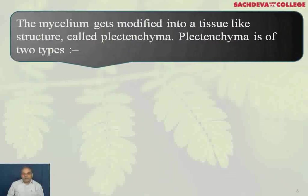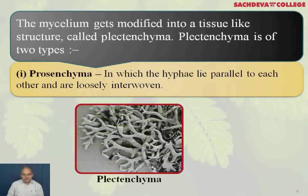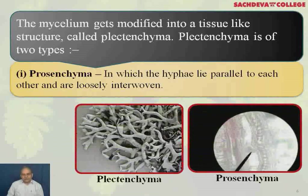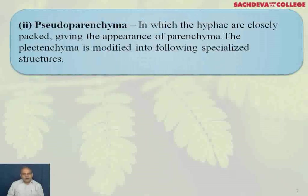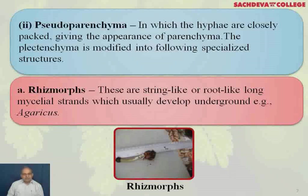The mycelium gets modified into tissue-like structures called plectenchyma, which is of two types. Prosenchyma, in which the hyphae lie parallel to each other and are loosely interwoven. You can see the prosenchyma here. Rhizomorphs are string-like or root-like long mycelial strands which usually develop underground, and you get these in Agaricus.